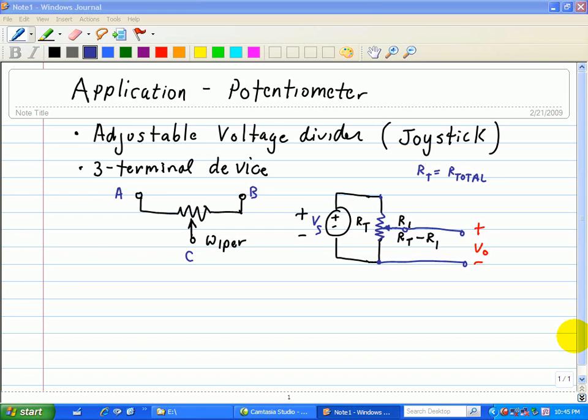It's basically a three-terminal device shown here. It's the symbol or schematic of a potentiometer. From here to here, A and B, is a total resistance of RT.